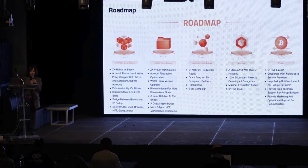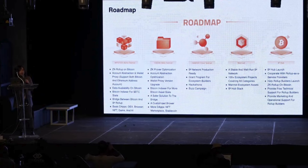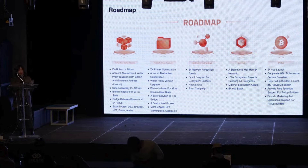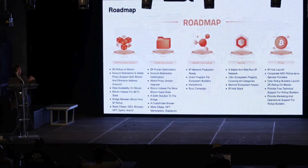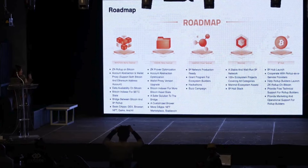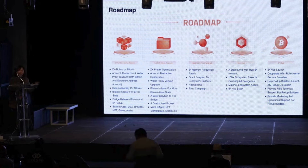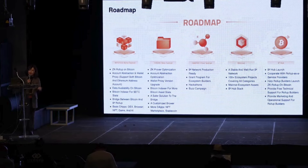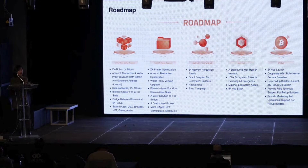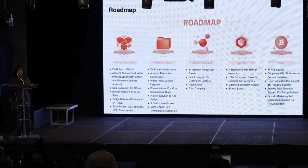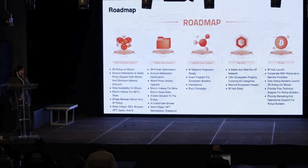Here are some milestones of our project. We launched our first testnet last December and are now running the third version. The stable and reliable operation of our testnet has already been validated by the market. As mentioned, we will promote and launch B-squared Hub to serve more rollups in Q2 of this year. We will launch our mainnet in the middle of March, and alongside that we have Odyssey activities on our testnet, a TVL campaign launched in late January, which has already accumulated more than 500 million USD in TVL. All of these assets will be the initial liquidity to boost the ecosystem when the mainnet launches.